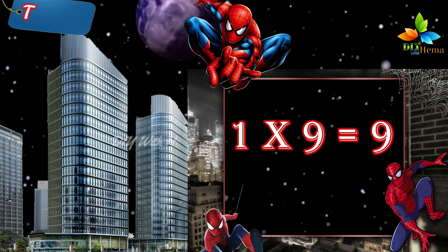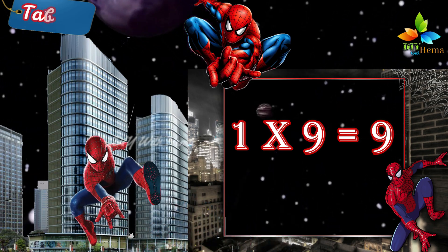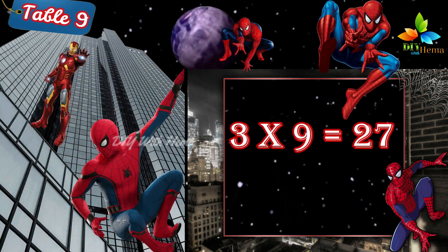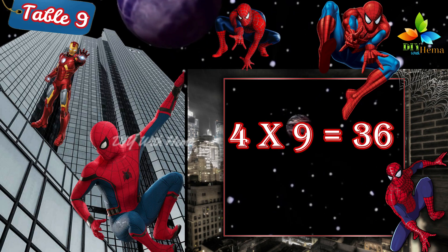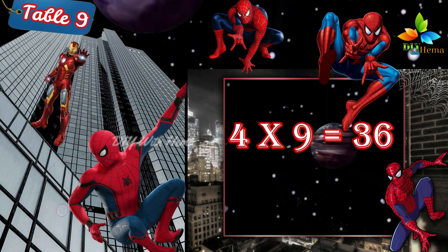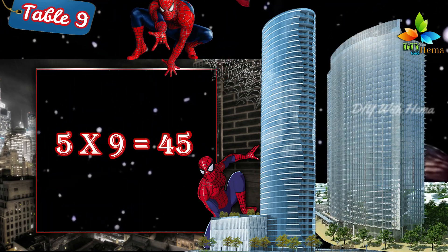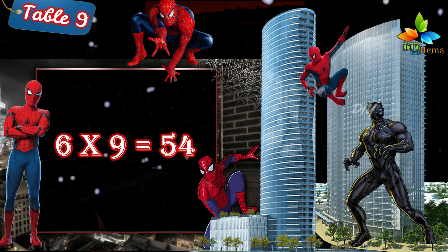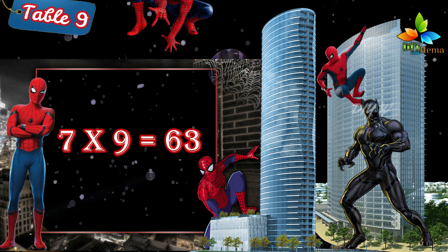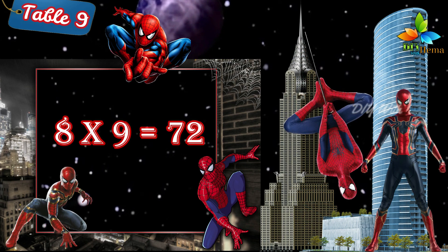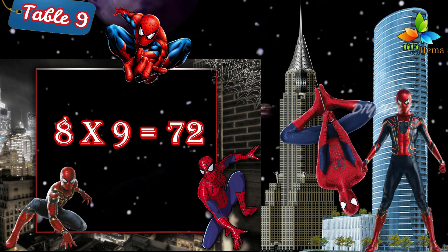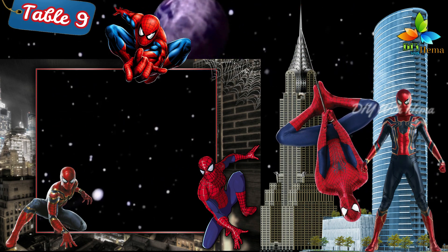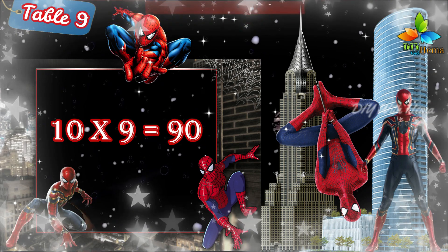One, nine is nine. Two, nines are eighteen. Three, nines are twenty-seven. Four, nines are thirty-six. Five, nines are forty-five. Six, nines are fifty-four. Seven, nines are sixty-three. Eight, nines are seventy-two. Nine, nines are eighty-one. Ten, nines are ninety.